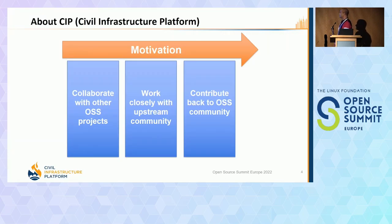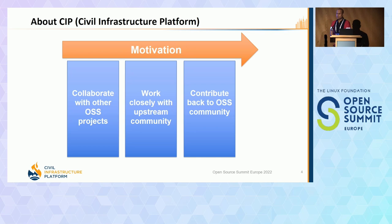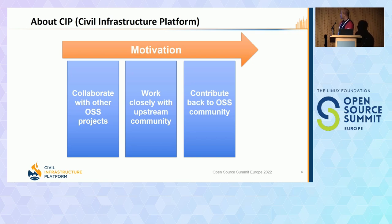The motivation behind CIP is always to collaborate with other open source projects and communities, work closely with upstream communities — for example, reproducible builds and similarly other upstream communities — and then contributing back to open source communities. This is how we collaborate with other communities and work together to solve problems. CIP has an upstream first policy, so any issues CIP users find, they can directly report to upstream or to CIP as well. When some solution is found, it has to go upstream and then it comes back to CIP and CIP users.